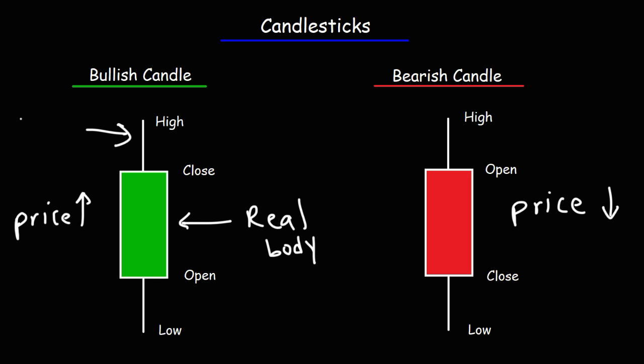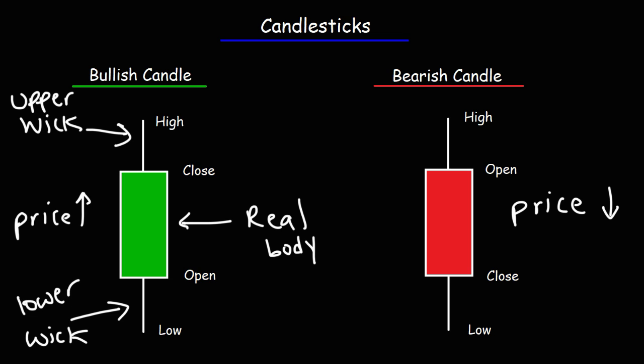This is the upper wick, also known as the upper shadow. There's something else that you could learn from these two candlesticks. A green bullish candle tells you that there's more buying pressure — that's why the price of the stock goes up — whereas a red bearish candle indicates that there's more selling pressure driving the price of the stock down. So these two candles can tell you the relationship between the buyers and the sellers that are actively trading the stock.